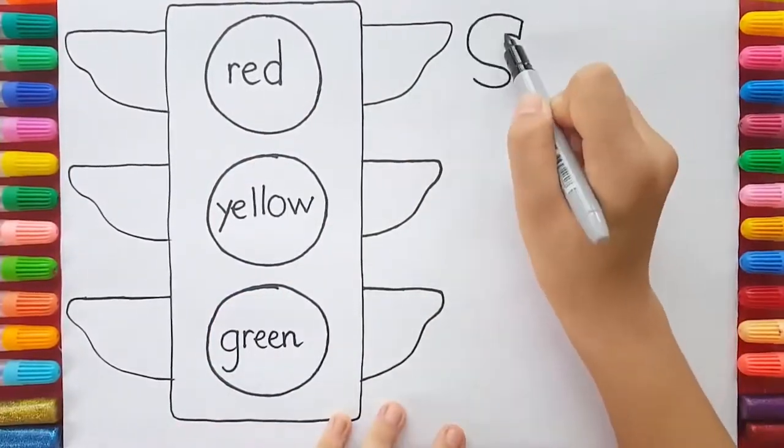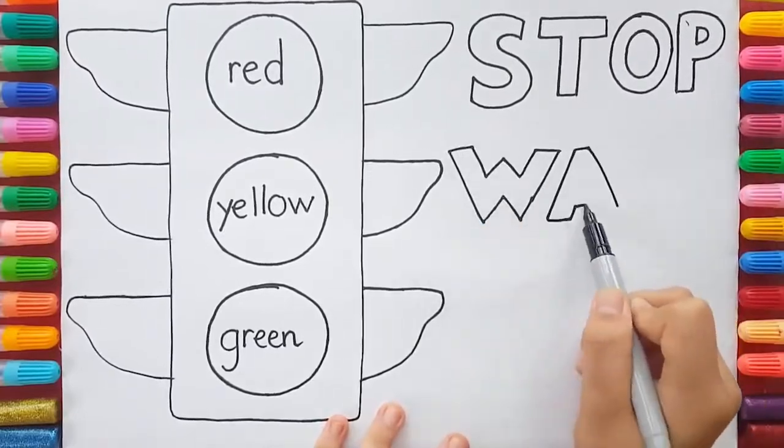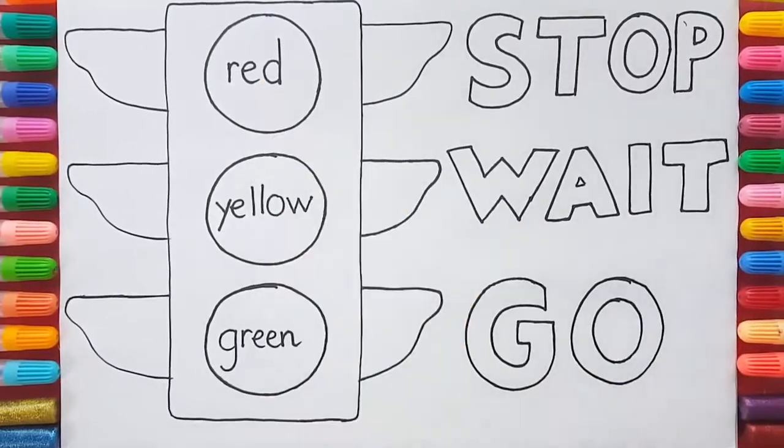Now, we're all familiar with traffic lights. It starts pretty early. As kids, we're fascinated by the three colors and the meanings behind them.